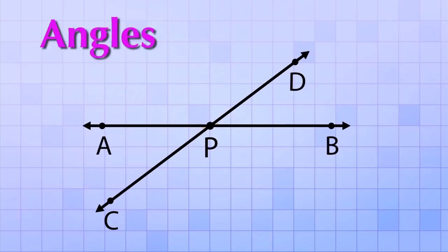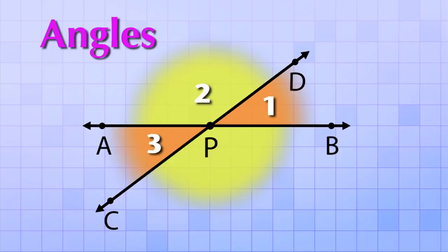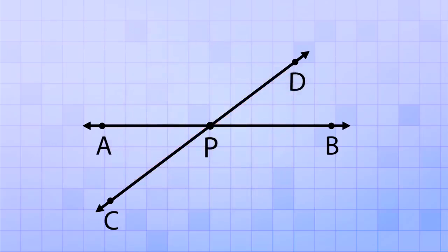You can think of the angles as the spaces or shapes that are formed between the intersecting lines. These intersecting lines form four angles. 1, 2, 3, 4. But instead of calling them angle 1, 2, 3 and 4, in geometry we name them by the points used to make them. For example,